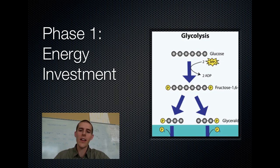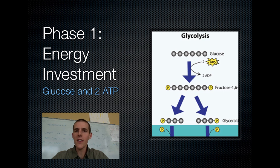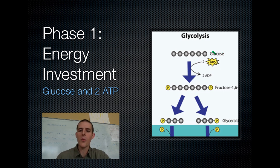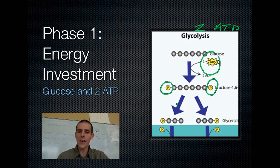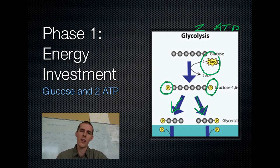Phase one of glycolysis is our energy investment phase. We have to talk about activation energy — the energy you need to destabilize a molecule so it's ready to start breaking down. We start out with glucose, and in this first stage we add two ATP molecules, investing a little bit of energy. Each ATP sticks a phosphate onto the glucose. Those hooked-on phosphates make glucose unstable and make it want to react. Once destabilized, glucose goes through a couple of intermediate molecules and eventually gets to two three-carbon molecules that continue through the rest of glycolysis.